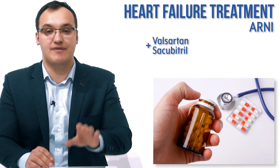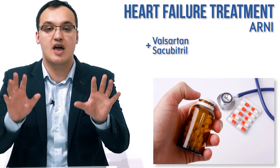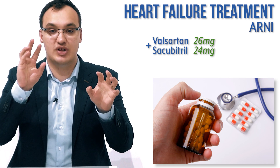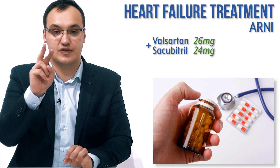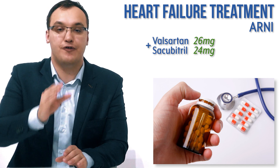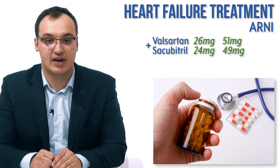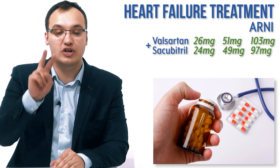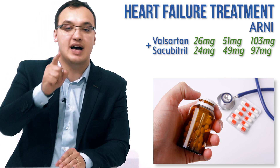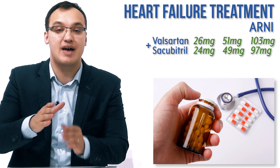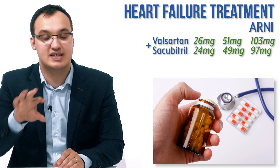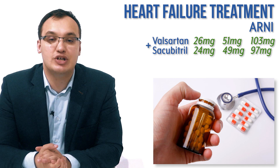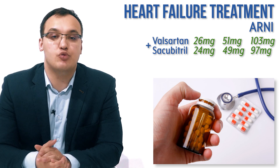Which type of doses do we have? We have three types of doses for valsartan combined with sacubitril. We can have 26/24 milligrams, or 51/49 milligrams, or 103/97 milligrams. The first two pairings differ by only two milligrams, while the highest dose pairing differs by six milligrams, making it the outlier.